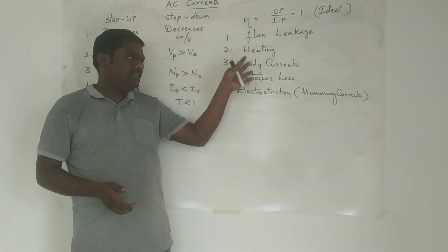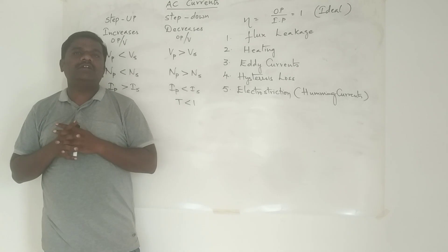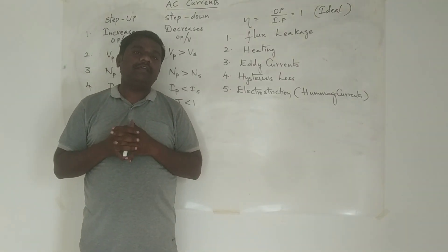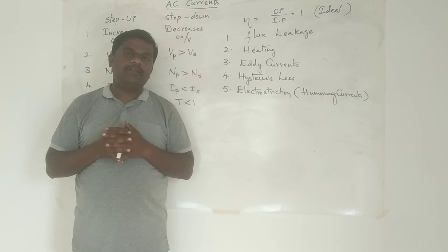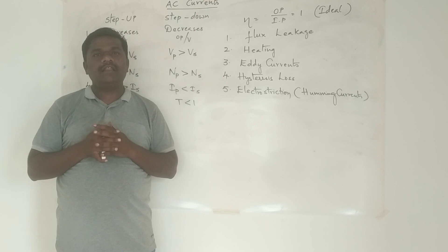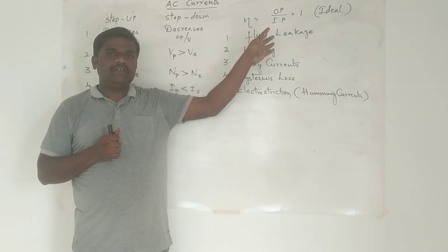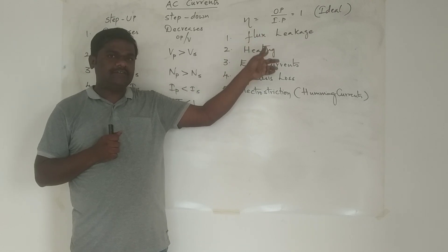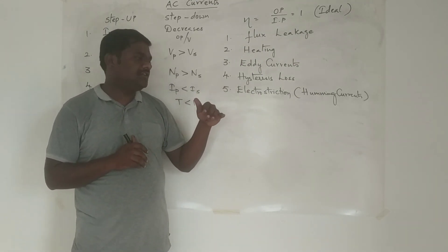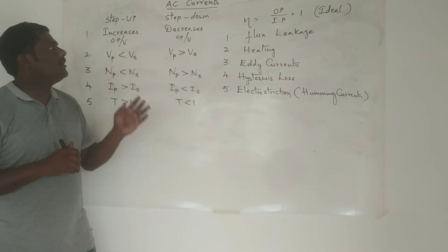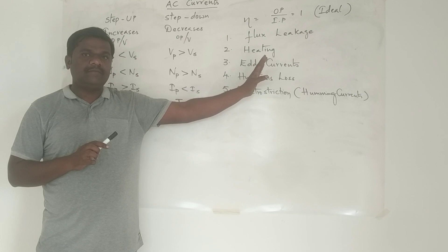Even if you apply all these minimizing steps, some amount of loss will always take place. Because of this, a transformer is never able to give equal output power compared to input power, and hence any transformer you take will always give less output power than input power. That is the reason why you will never find an ideal transformer in practice. These are the reasons behind why efficiency is never equal to 1, i.e., the energy losses in transformers. Note that the first four losses are officially in the syllabus; the fifth is for extra reference.